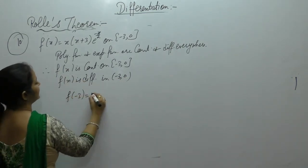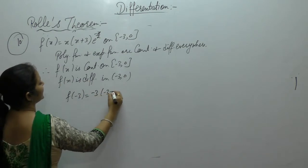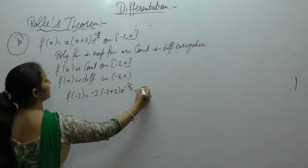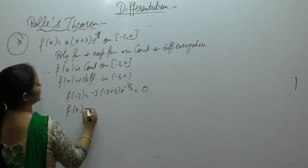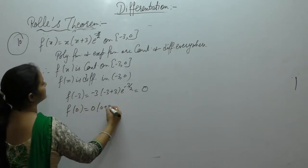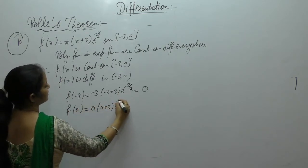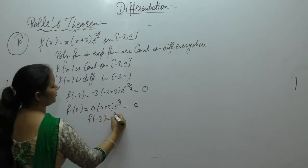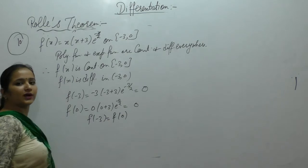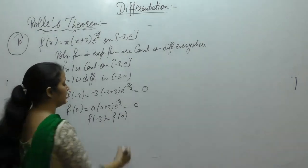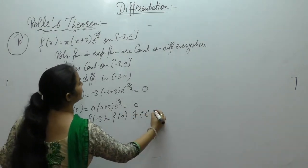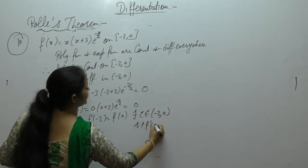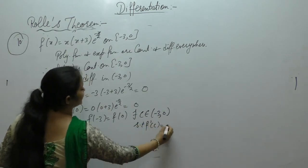Now, f(-3) = (-3)(-3+3) = (-3)(0) = 0. And f(0) = 0 × something = 0. So f(-3) = f(0). Therefore, there exists c belonging to (-3, 0) such that f'(c) = 0.